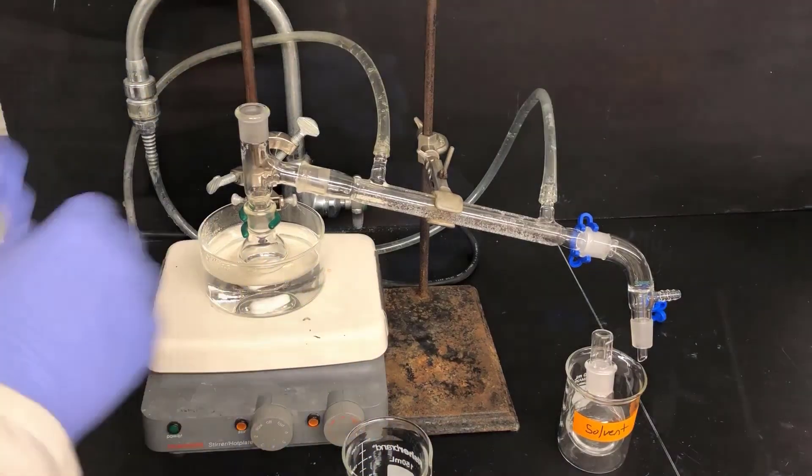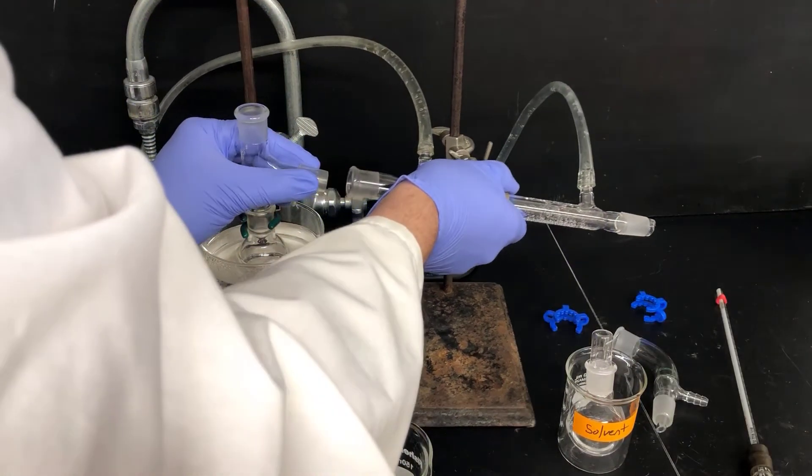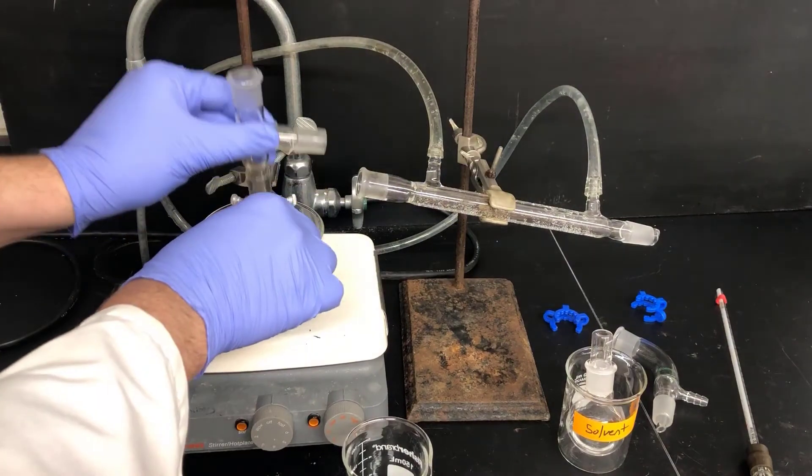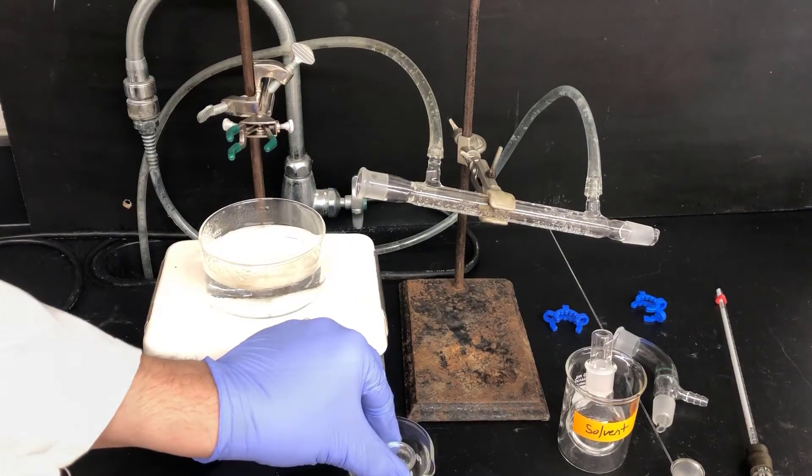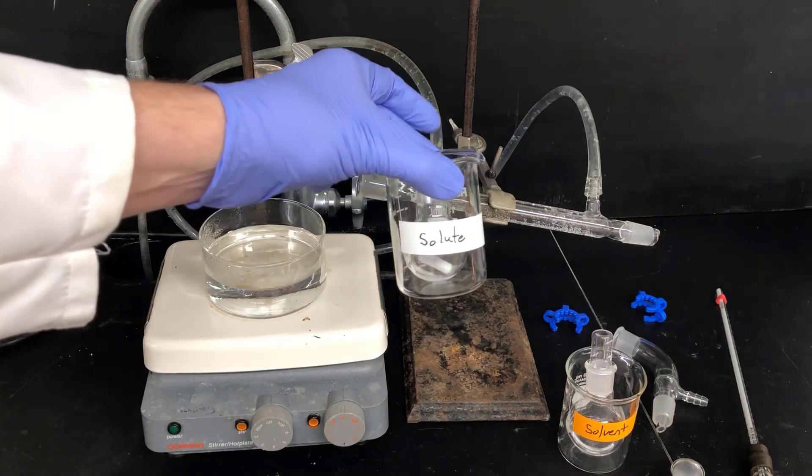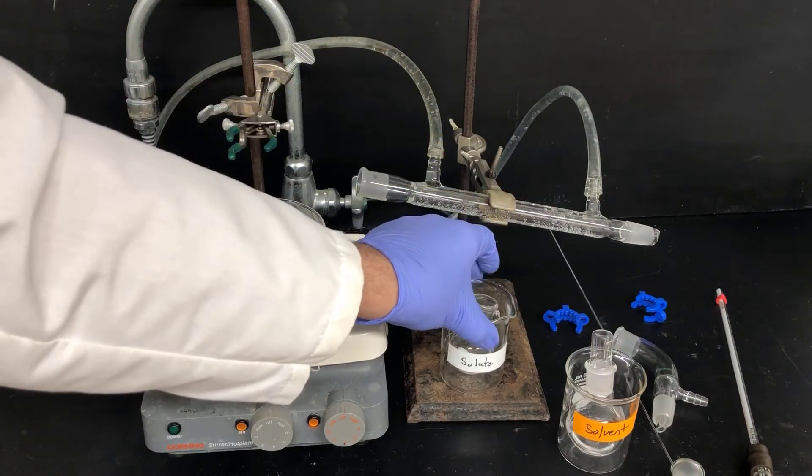Then I'll disassemble the distillation apparatus to get to the distillation flask, which contains a residue of unknown solute. And then I'll put that in a beaker labeled solute. This flask contains mainly the unknown solute, but there's still going to be a little bit of residual solvent that's left inside there.